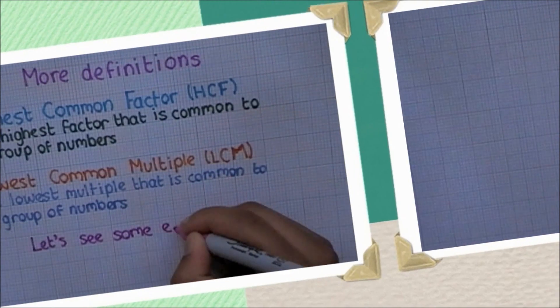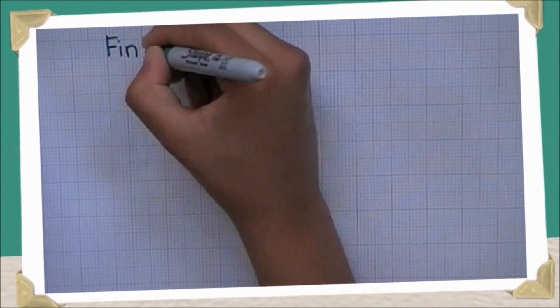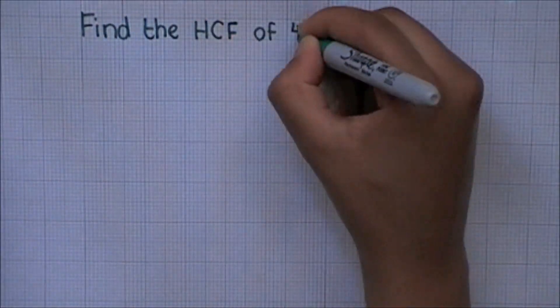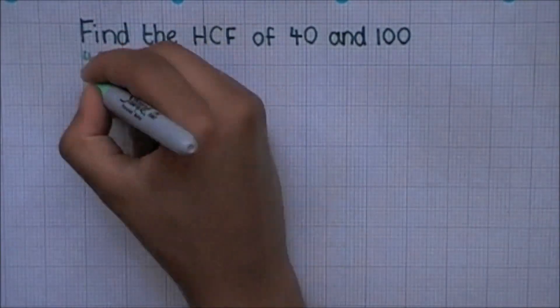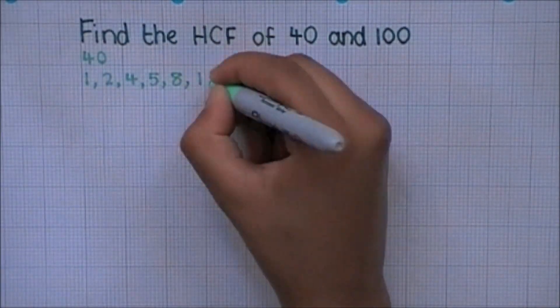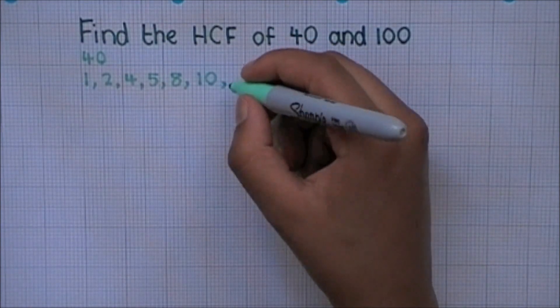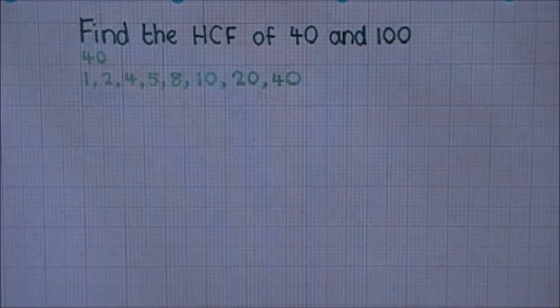But examples make explaining things easier, so let's take a look at some. Find the HCF of 40 and 100. Let's start by writing out the factors of 40 first. 1, 2, 4, 5, 8, 10, 20, 40.